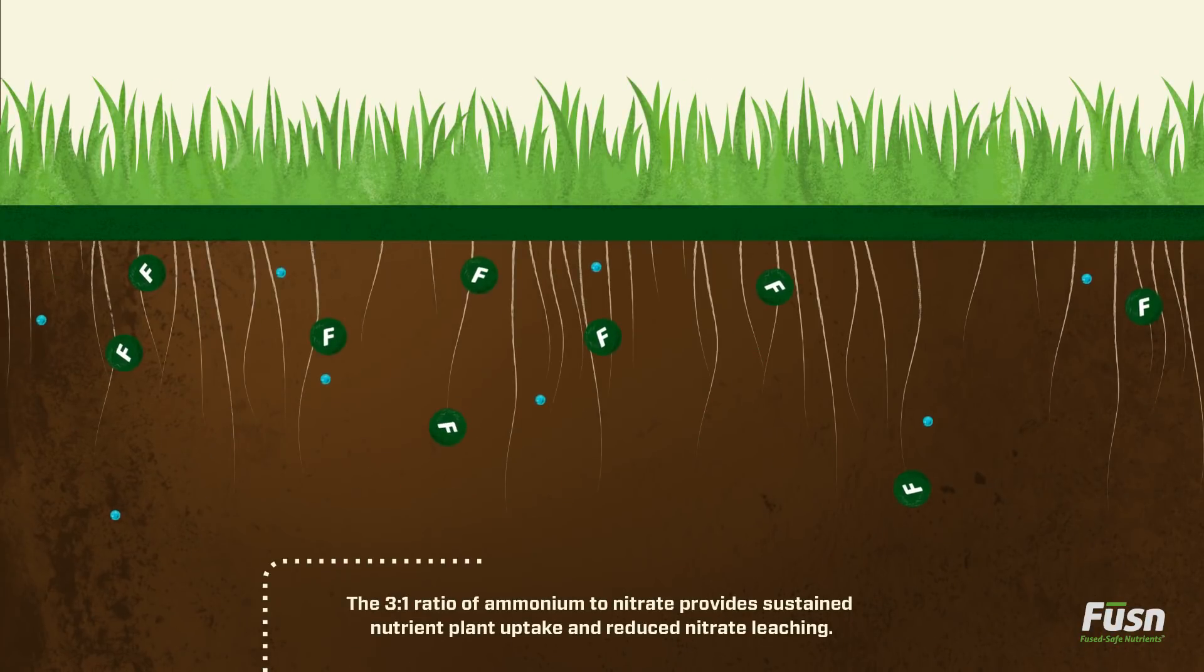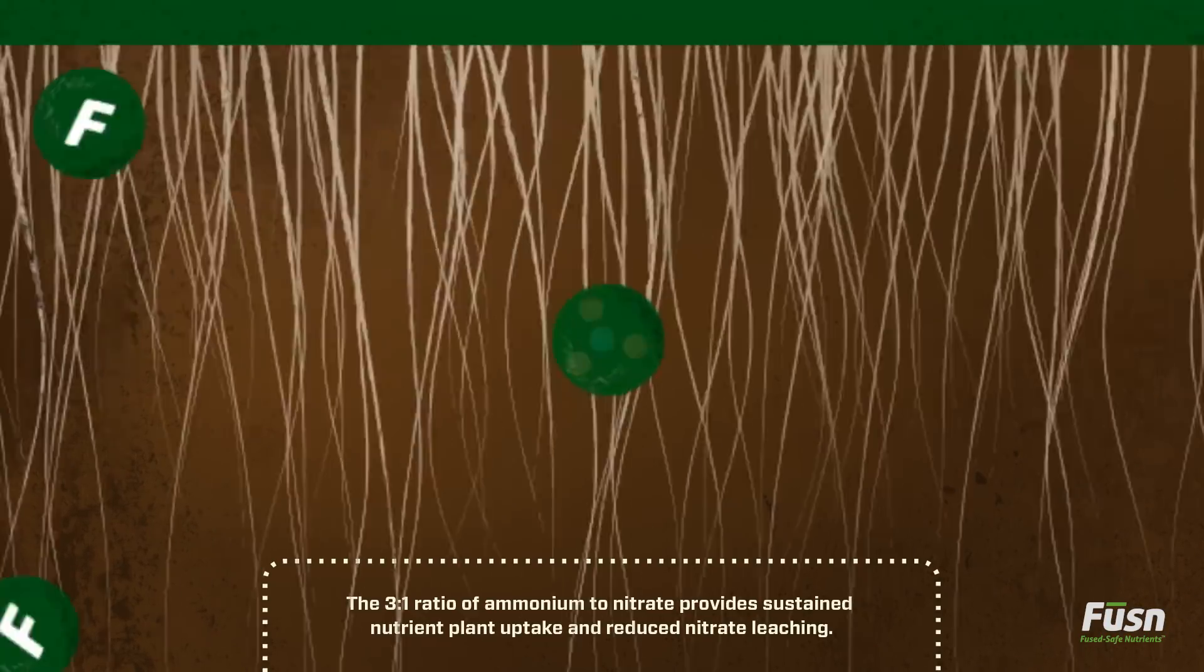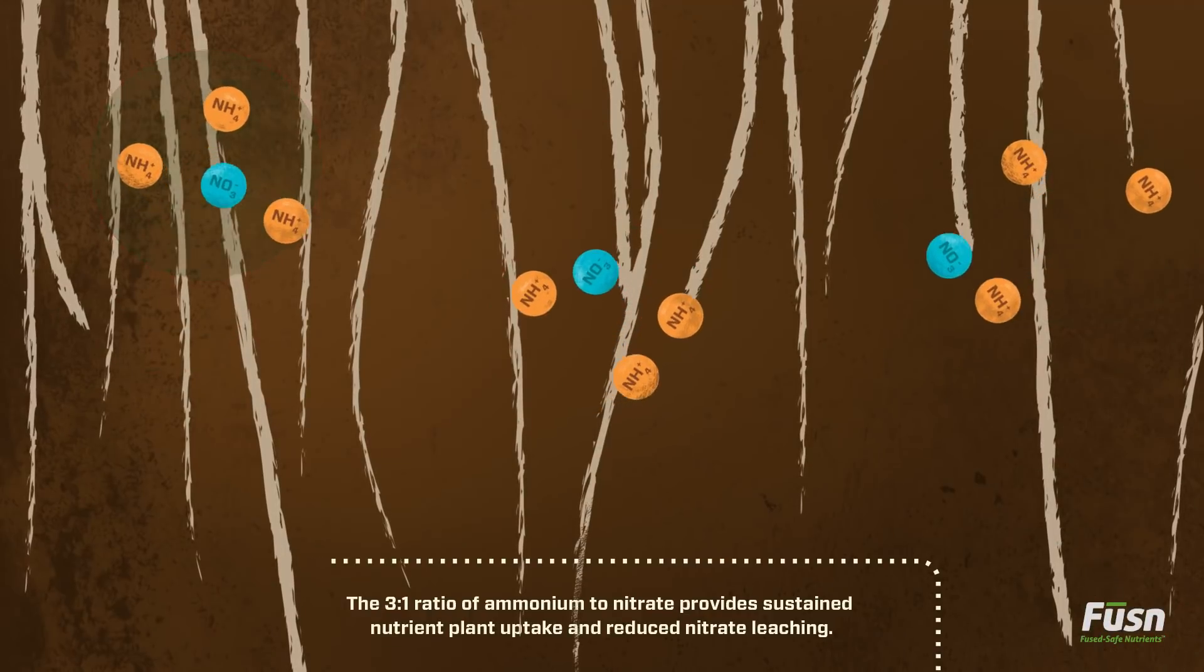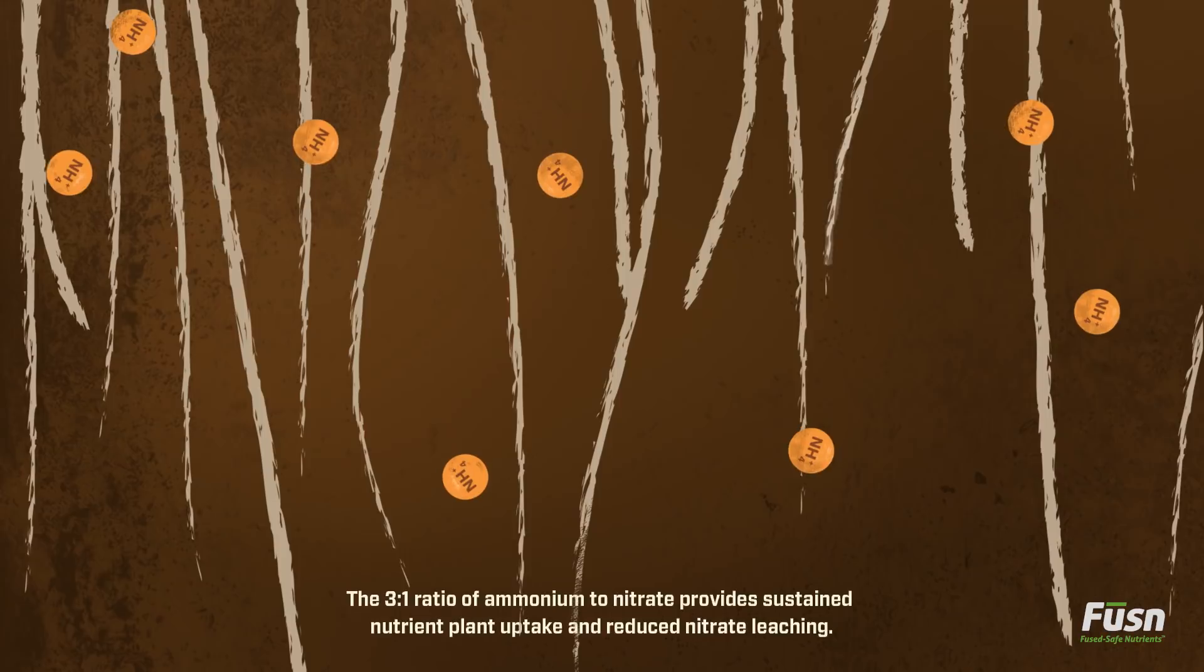With fusion, two forms of nitrogen are made readily available at your root's tips. Nitrate is uptaken quickly. Nitrification is more gradual, meaning your plants enjoy both immediate availability and continuing access to nitrogen.